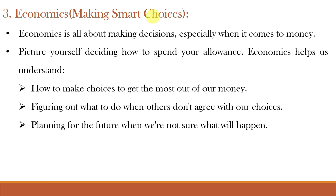Third is Economics, which is related to making smart choices. AI is nowadays used in predicting stock prices so that you can make good money. Economics studies how individuals, businesses and societies make choices in the allocation of resources. In AI, economic principles inform decision-making algorithms and strategies for resource allocation. For example, in game theory, AI agents may use economic models to predict and respond to the actions of other agents in competitive environments. Think of AI deciding how to spend your allowance — economics helps understand how to make choices to get the most out of our money and plan for the future under uncertainty.